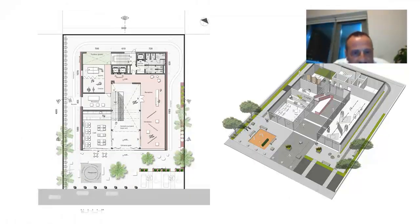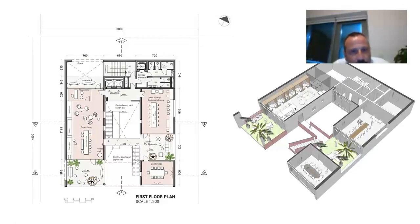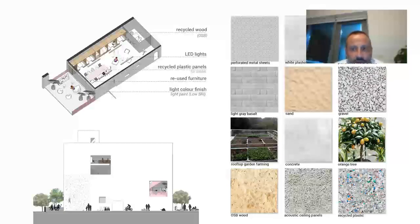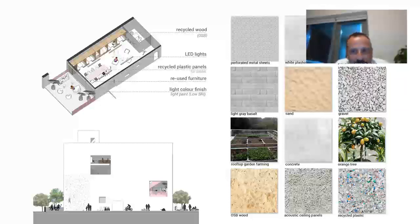The building's ground floor was organized to include the main public functions such as coffee shop and exhibition spaces. On the first floor we have the co-working space, library, and conference room. The second floor was dedicated to vocational training spaces, art studios, and an art garden. The workshops were located on the third floor and can be subdivided into different size studios. As part of an environmentally conscious approach, recycled materials such as wood and plastic were used for furniture.